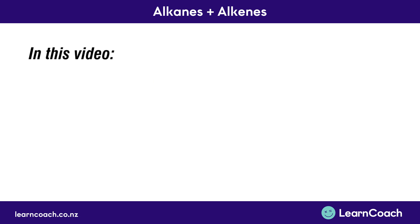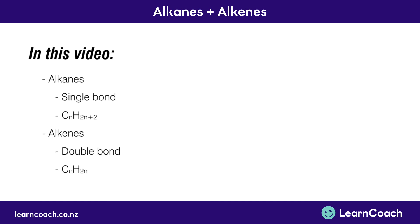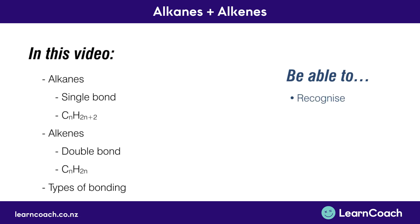In this video we have covered the simple basics behind alkanes and alkenes. With alkanes, there is a single bond and the formula is CnH2n+2. With alkenes, it's a double bond and the formula is CnH2n. We also looked at the types of bonding: alkanes have a saturated bond, whereas alkenes have an unsaturated bond. The exam keyword questions you should now be able to answer include recognizing simple hydrocarbons, naming and drawing both alkanes and alkenes, explaining the bonding, describing how they differ, and comparing and contrasting the different bonding between alkanes and alkenes.